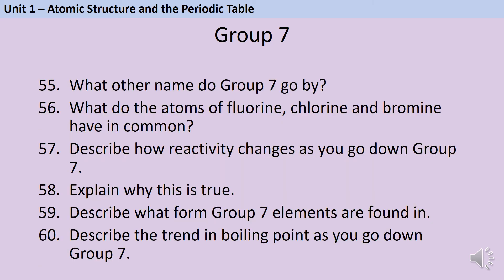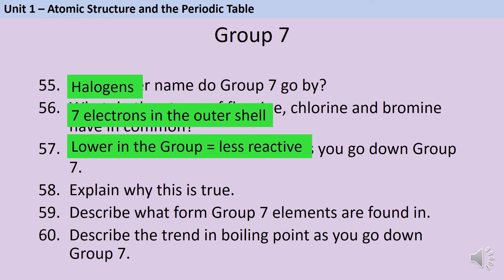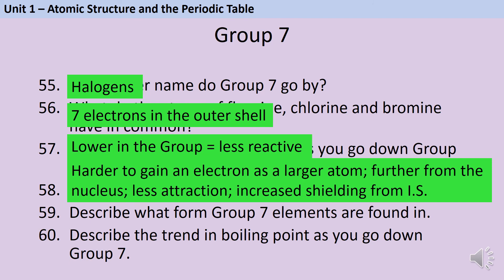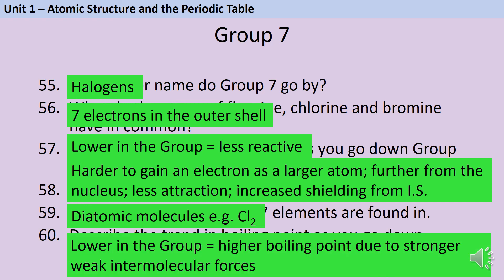Group 7 are also known as the halogens, and the atoms of fluorine, chlorine, bromine and all of Group 7 have seven electrons in their outer shell. As you go down Group 7 the elements become less reactive, because when they react they gain an electron — the opposite of the alkali metals. It's harder to gain an electron in a larger atom because that electron is further from the nucleus and experiences less attraction, and there's increased shielding from the inner shells. The Group 7 elements are found as diatomic molecules, meaning two atoms joined together, such as Cl₂. As you go down Group 7, boiling point increases because the molecules are getting larger, resulting in stronger intermolecular forces.